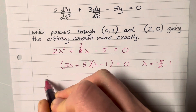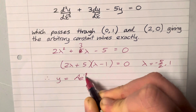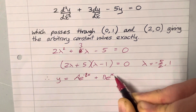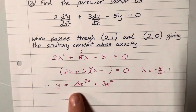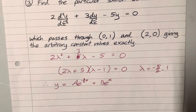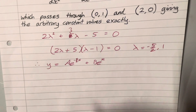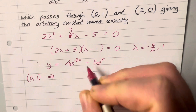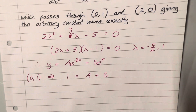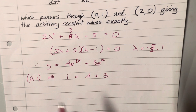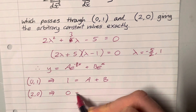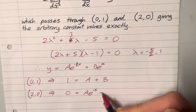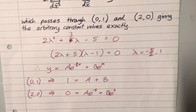We get lambda equals minus 5/2 or positive 1 — two distinct real solutions. So the general solution is y equals A e to the minus 5/2 x plus B e to the x. Now we want the particular solution passing through (0, 1) and (2, 0). When x is 0, y is 1, giving 1 equals A plus B. When x is 2, y is 0, giving 0 equals A e to the minus 5 plus B e squared.